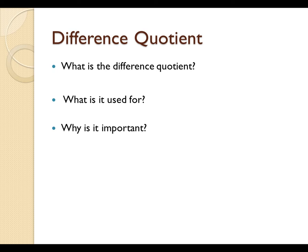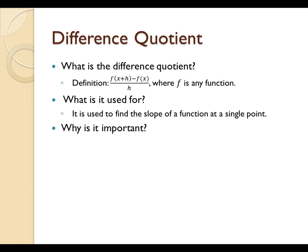The answer to the first question is that it's defined as f of x plus h minus f of x all over h, where f is any function. The answer to the second question, what is it used for, is that it's used to find the slope of a function at a single point, and it's important for those of you going on to calculus because it's used in the definition of a derivative.